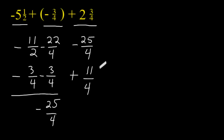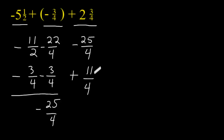Just like addition, when you subtract, you have to make sure that you have a common denominator. In this situation, we already have a common denominator so we can keep those denominators as they are. So let's take 25 and 11 and subtract those two values together. That would give us a total of 14 quarters.